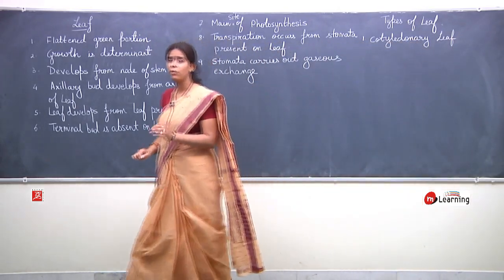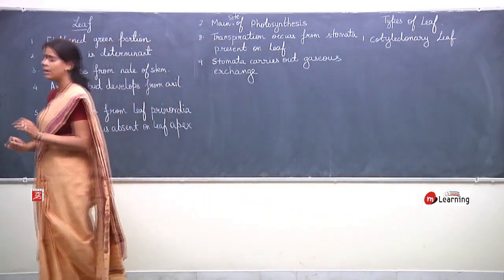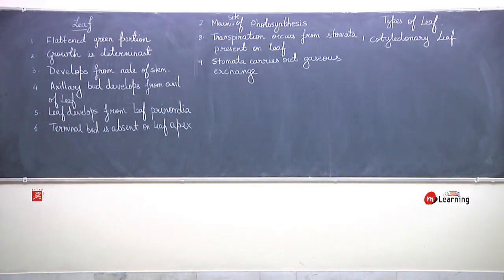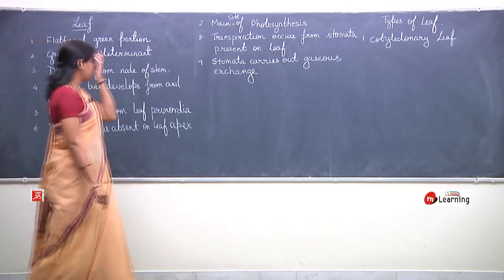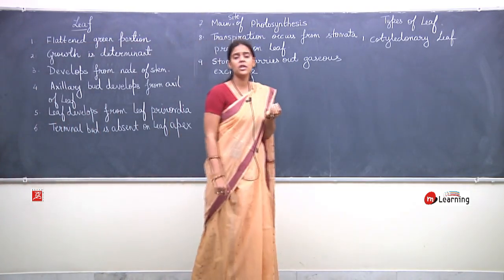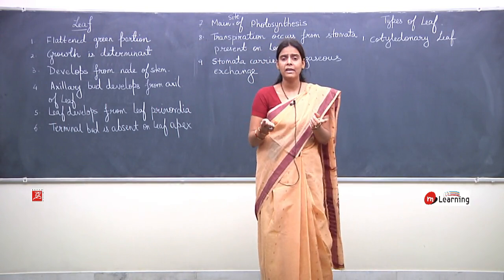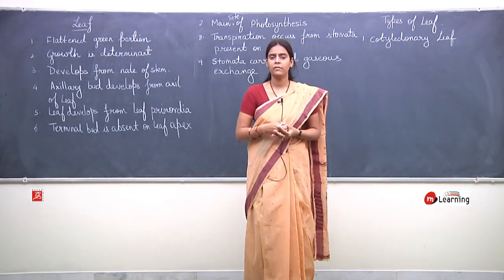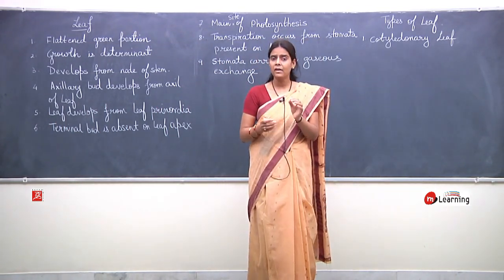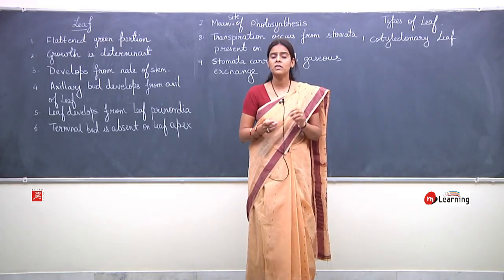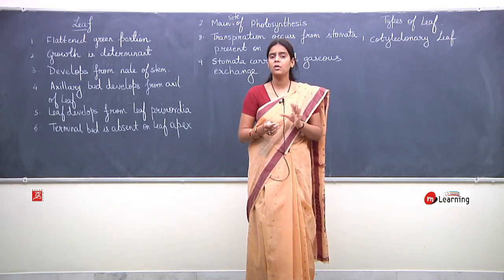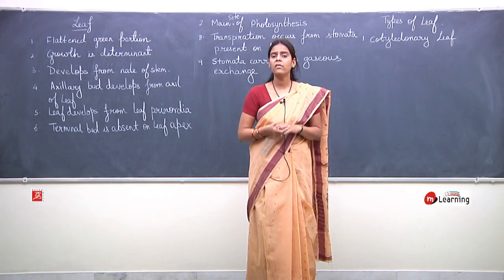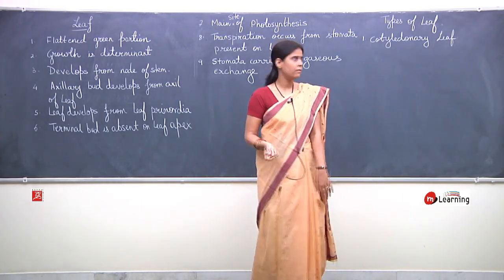Our first type of leaf is cotyledonary leaf. Seed germination ke baad jo embryonic leaves develop hoti hain, unhe cotyledonary leaves kaha jata hai. The first leaf developing during germination of seed is known as cotyledonary leaves.